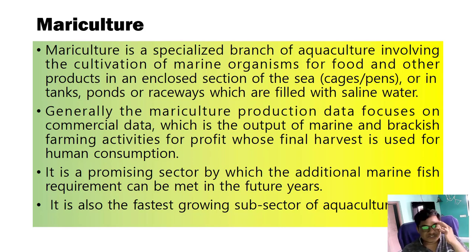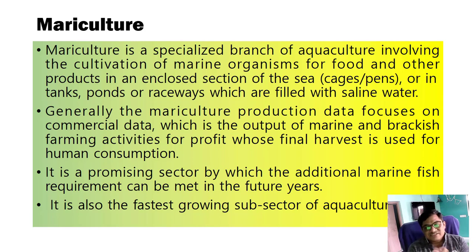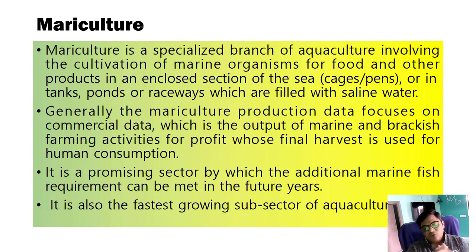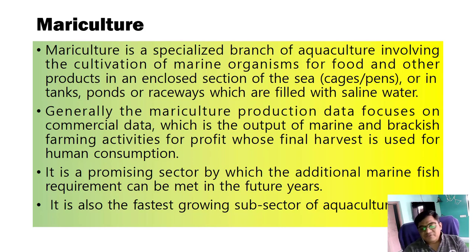We will discuss the number of fish species that are used in mariculture. But first, we will discuss what is mariculture. Mariculture is a specialized branch of aquaculture involving the cultivation of marine organisms for the purpose of food and other products, in an enclosed section of the sea in the form of cages, pens, tanks, or raceways, which are filled with saline water.